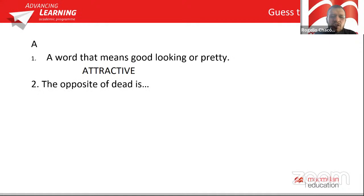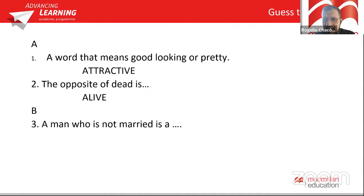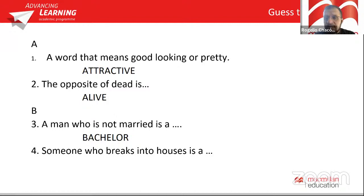Starts with A and it is the opposite of dead. Armando Flores — alive! Alive is the correct word. Awesome. Now this one starts with B and it is a man who's not married. How do we call a man who's not married? Diego Carlos — fantastic! It's a bachelor. This one starts with B as well and it is someone who breaks into houses. Burglar — Diego Carlos, fantastic! That is correct. A burglar.